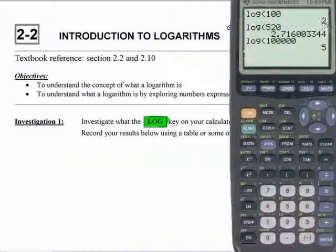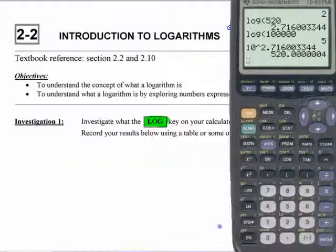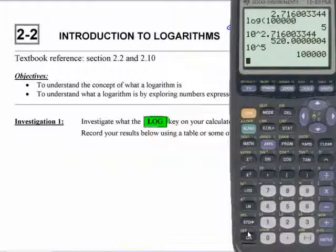100 is 10 to the power of 2, so its logarithm is 2. 100,000 is 10 to the 5, so its logarithm is 5. Now, this one's harder to see, but logarithm of 520 is this number here, because if I did 10 to the power of 2.71600... Now, it's not going to be exact, because this continues on, just like square roots and everything. It's irrational, but it's 520. Or logarithm of 10,000 is 5, because 10 to the 5th is... Sorry, 100,000.